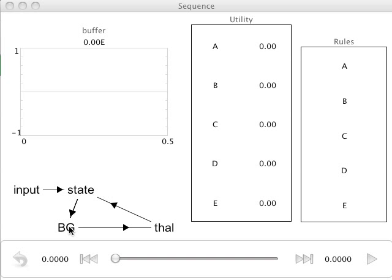This projects to basal ganglia. The most valuable state is selected by basal ganglia, which then projects to thalamus, disinhibiting an associated action. The action then changes the state of cortex, completing the famous cortex-basal ganglia-thalamus loop.